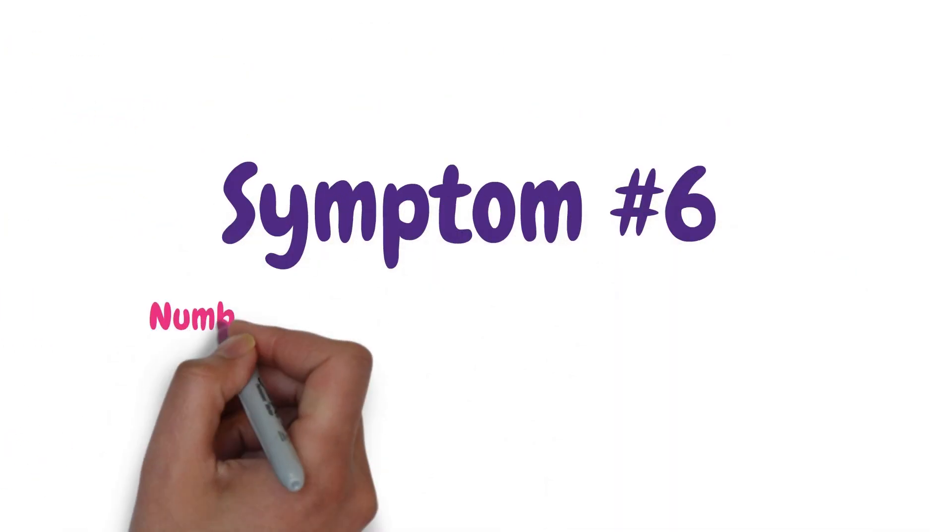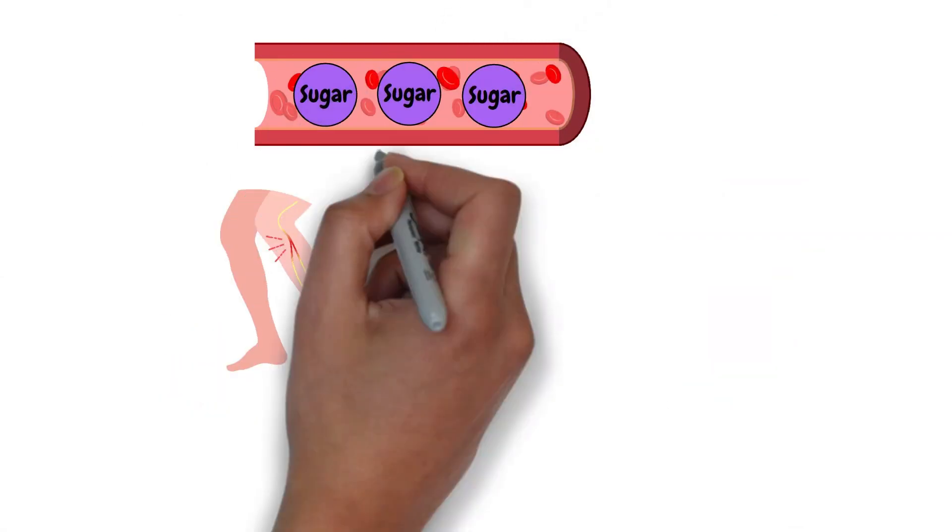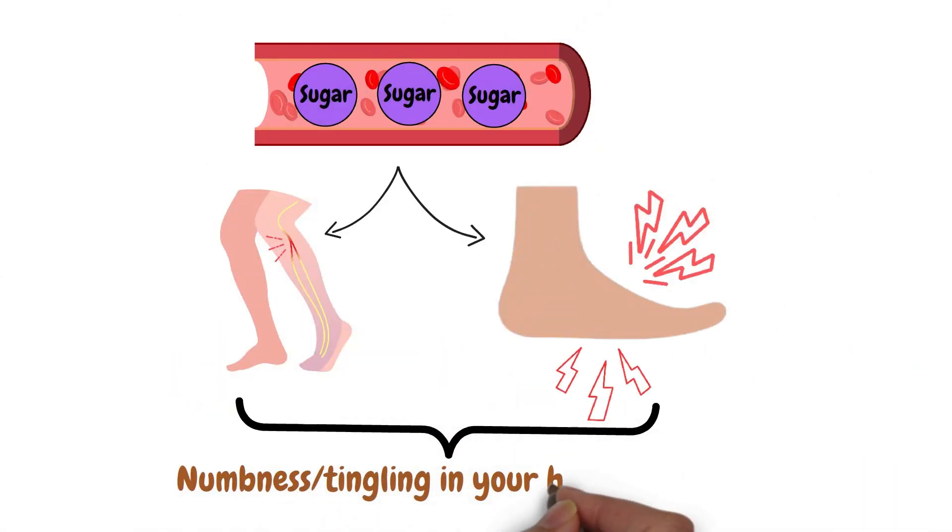Symptom number 6 is numbness or tingling in your hands or feet. High blood sugar can damage nerves in the legs and feet. This can lead to feelings of numbness and tingling.